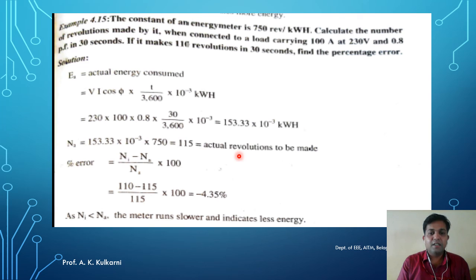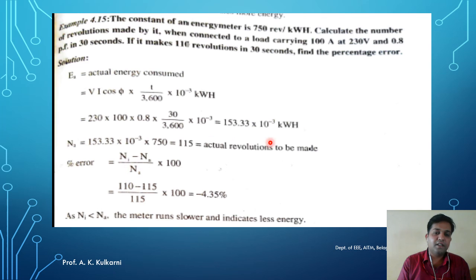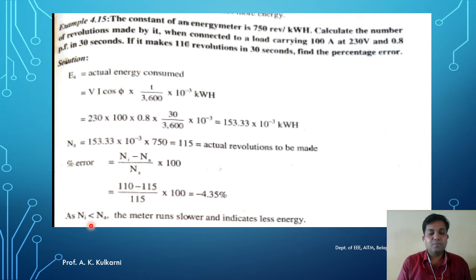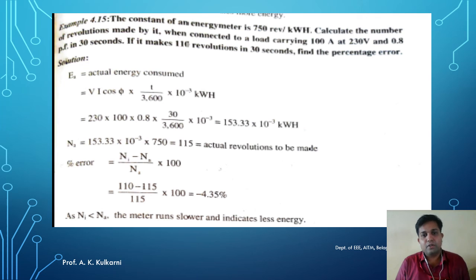The actual revolutions to be made are 115. When the meter makes only 110 revolutions, the percentage error = (110 − 115) / 115 × 100 = −4.35%. The indicated revolution is smaller than the actual revolution, meaning the meter runs slower and indicates less energy. The meter needs to be recalibrated so that the indicated energy equals the actual energy.